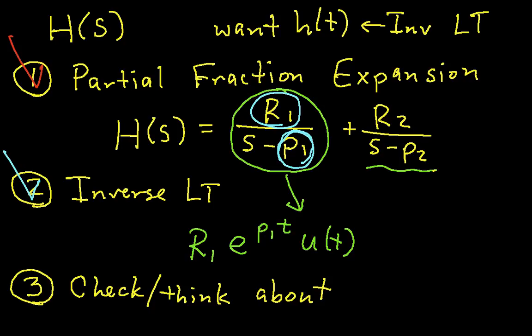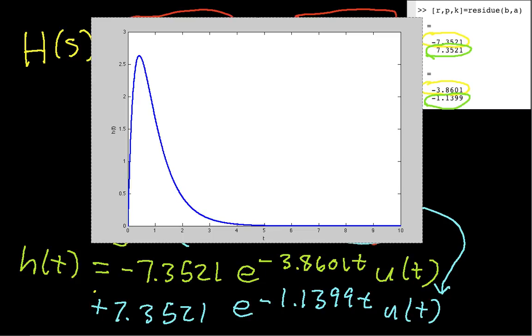So the only thing left to do now is to plot this and think about it, make sure it makes sense. So we'll do that. OK, so I've created a plot of H(t). I actually used MATLAB to do this, but there's all sorts of different ways you could do this plot. And the question is, does it look like it should? Well, from my perspective it does. You have that the, again this is what you would get as an output if you had an impulse as an input.